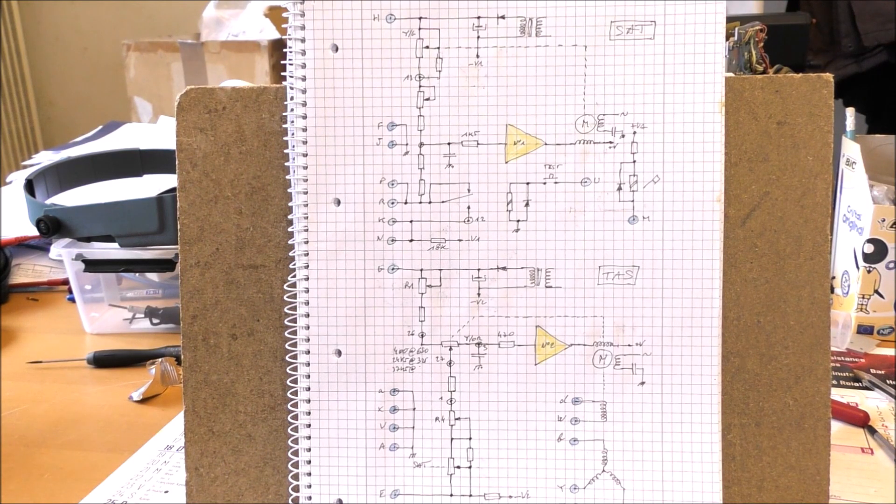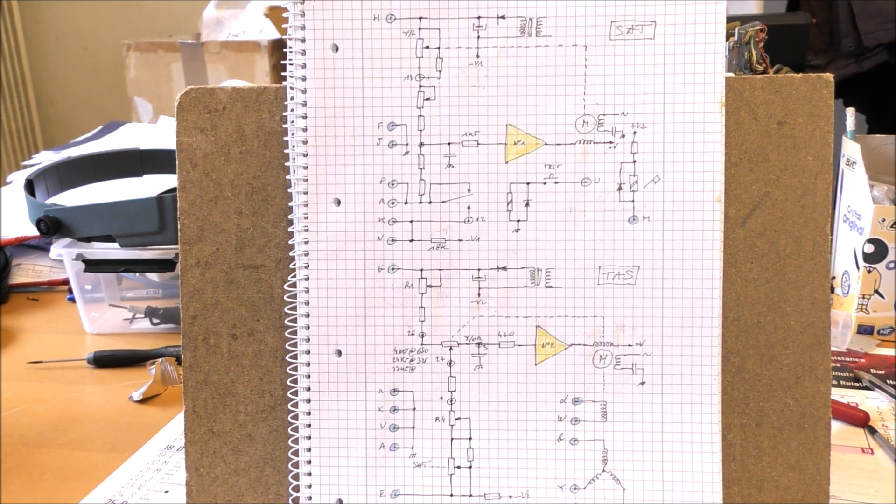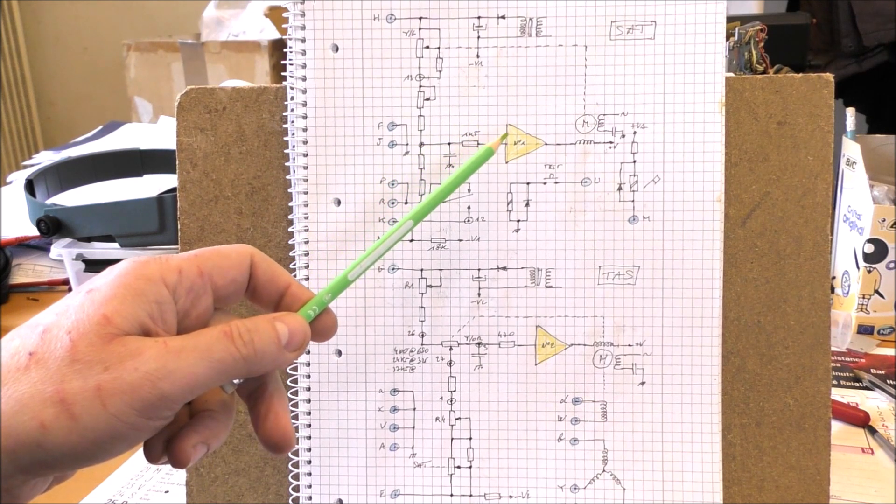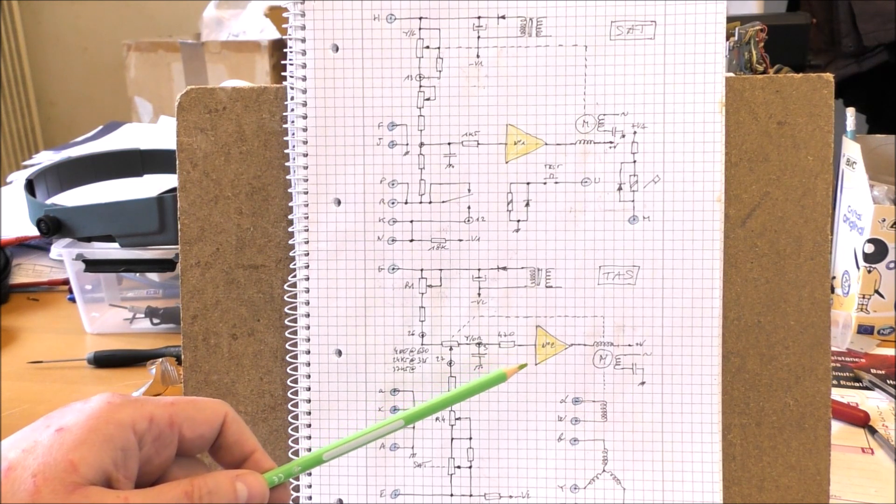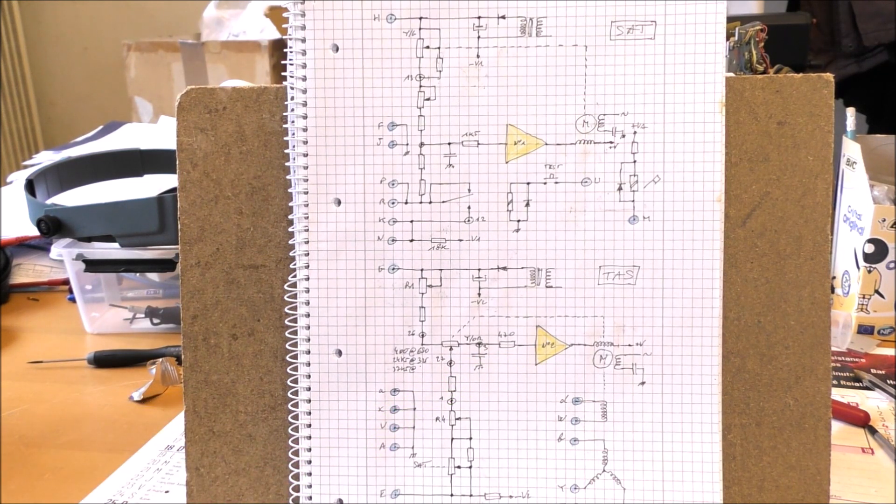You can see on that page the complete schematics. We have the two servo control amplifiers here, this one for the static temperature and on the bottom of this page a second one for the true airspeed. The schematic diagram is more or less identical for both indications.